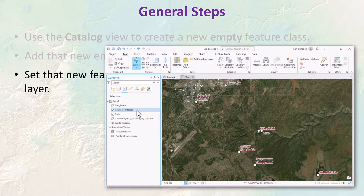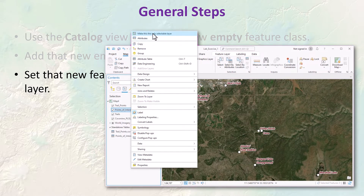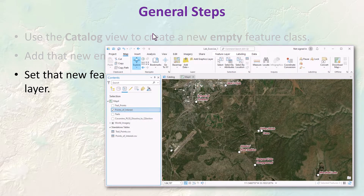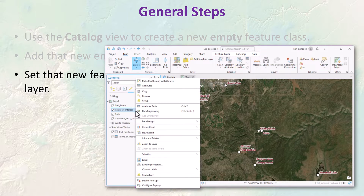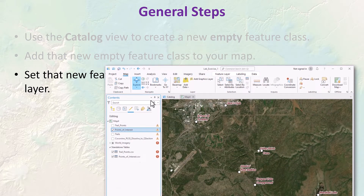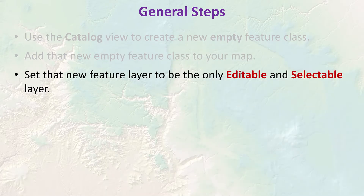If you want to edit multiple feature classes, you'd have multiple ones set to be editable. Sometimes you want to select features from other data sets while you're working, such as to copy and paste them from other data into your current feature class. But in general, setting your current layer to be the only editable one helps avoid errors like accidentally deleting data from other data sets or creating new features in the wrong feature class.